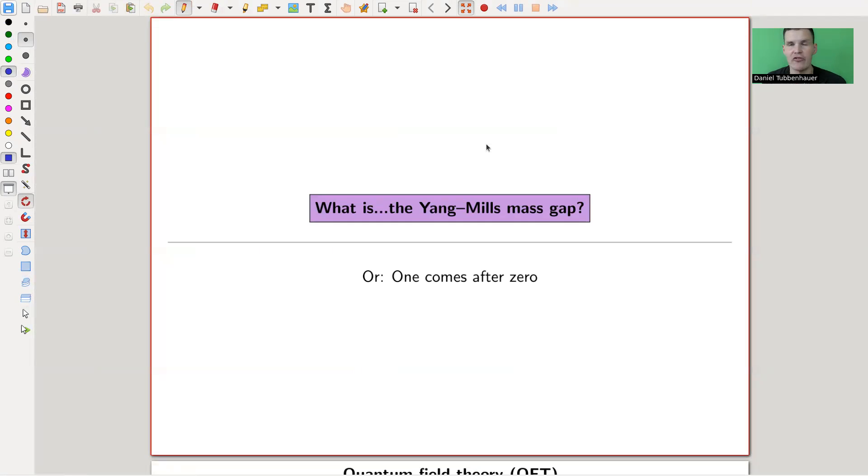Welcome everyone to my continuation of what are my favorite theorems. Very biased, of course. This is the last one on the Millennium Problems, which I feel is the most difficult one to explain. It's actually called Existence and Mass Gap, but I felt that was too long as the title, so I just went with Mass Gap.